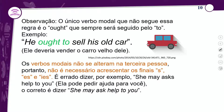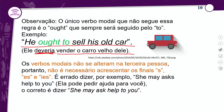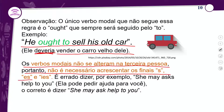Observação: o único verbo modal que não segue a regra é o 'ought to', que sempre será seguido pelo 'to'. Exemplo: 'He ought to sell his old car' — ele deveria vender o carro velho dele. Os verbos modais não se alteram na terceira pessoa — que coisa boa! Eles são os melhores verbos em inglês porque não têm flexão verbal. Portanto, não é necessário acrescentar os finais -s/-es da terceira pessoa do Simple Present.